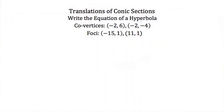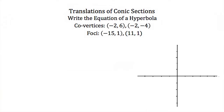Now the last thing we're going to do is write the equation of a hyperbola, given that our co-vertices are (-2, 6) and (-2, -4), and our foci are (-15, 1) and (11, 1). As always, it's easiest to draw a quick sketch. Plotting the co-vertices and foci, we find that the center of our hyperbola is the point (-2, 1).